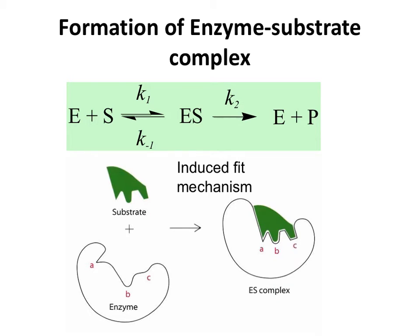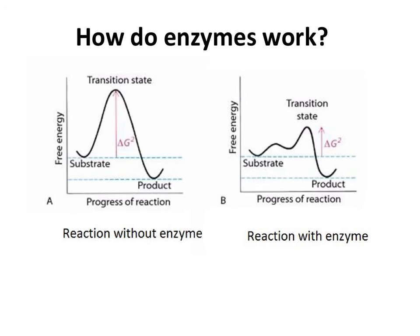A chemical reaction of substrate to form product goes through the formation of a transition state that has a higher free energy than the substrate or the product. This is the energy of the substrate, and this is the energy of the product.